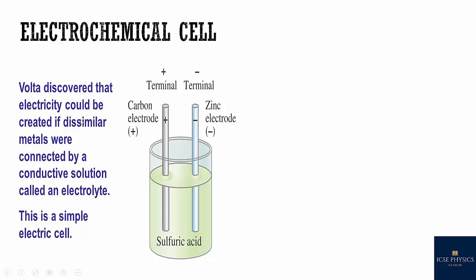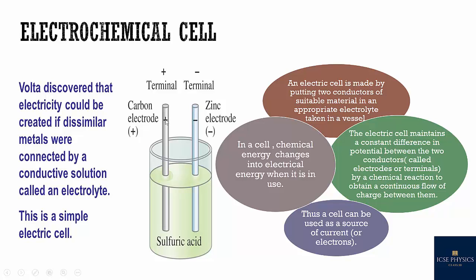An electric cell, or electrochemical cell, is used to create electricity by two dissimilar metals known as electrodes — anode and cathode — which are connected by a conductive solution known as electrolyte. The electric cell maintains a constant difference in potential between the two conductors by a chemical reaction to obtain a continuous flow of charge. In a cell, chemical energy changes into electrical energy when it is in use.